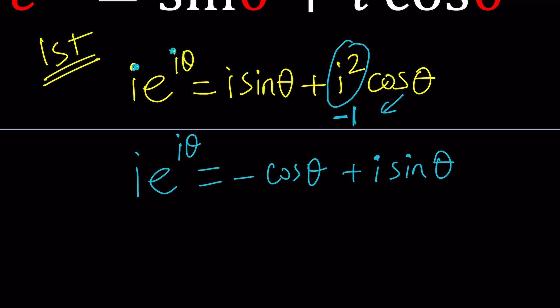On the left-hand side, I have i e to the i theta. I understand e to the i theta is a number whose modulus is one, but what about i? Can that be the modulus? No. The modulus has to be a real number. So we kind of have to make e to the i theta absorb the i in the front.